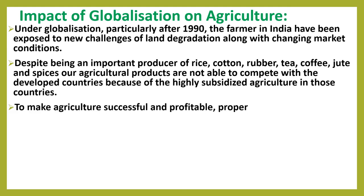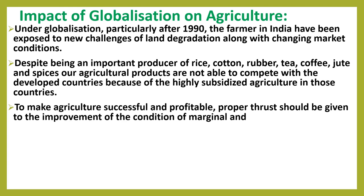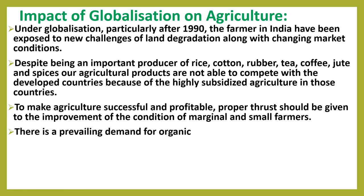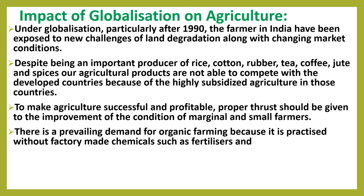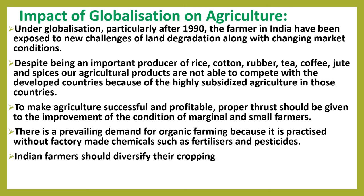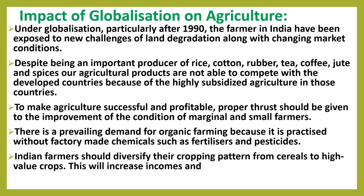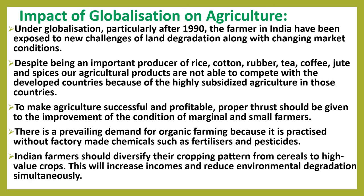To make agriculture successful and profitable, proper thrust should be given to the improvement of the condition of marginal and small farmers. There is a prevailing demand for organic farming because it is practiced without factory-made chemicals such as fertilizers and pesticides. Indian farmers should diversify their cropping pattern from cereals to high-value crops. This will increase incomes and reduce environmental degradation simultaneously.